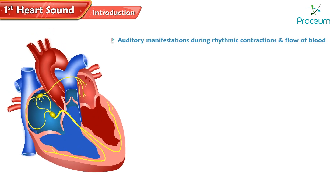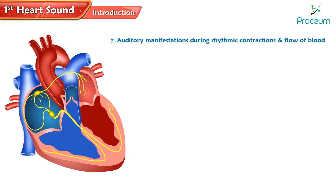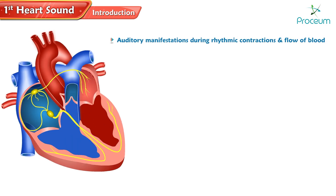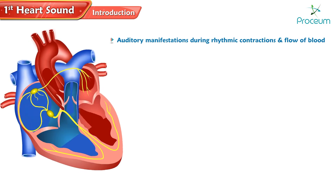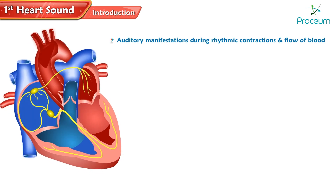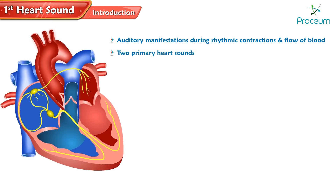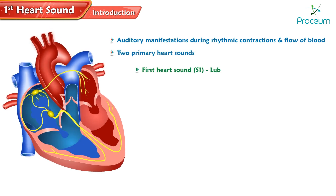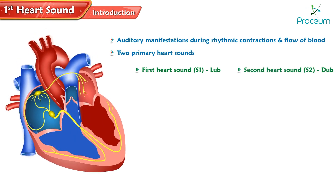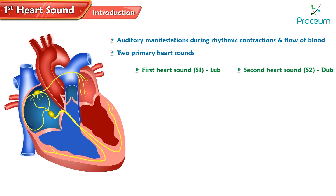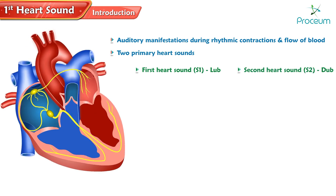Heart sounds are the auditory manifestations of the heart's activity during its rhythmic contractions and the flow of blood through its chambers and vessels. When listening to the heart, two primary sounds are heard: the first sound S1, often described as 'lub', and the second heart sound S2, often described as 'dub'.